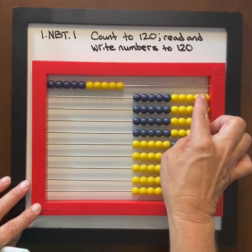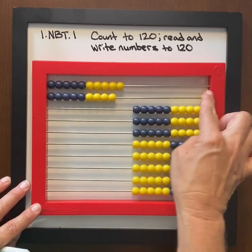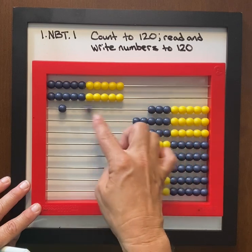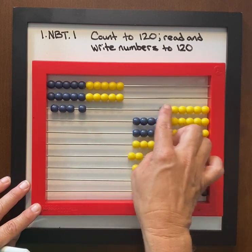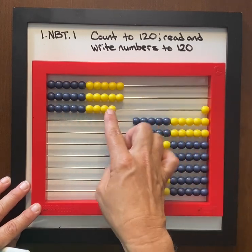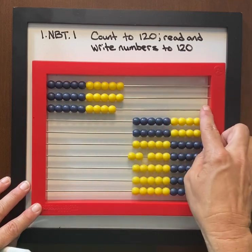So if we have 1 ten 9, 2 tens, 2 tens 1, 2 tens 2, 2 tens 3, 2 tens 4, 2 tens 5, here we have 2 tens 9, 3 tens.